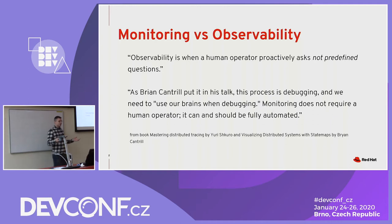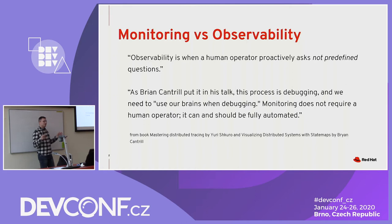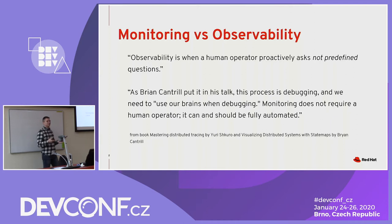Before we start, I would like to talk about the difference between monitoring and observability, because I think these two terms are referred to interchangeably and I don't think they mean the same. Observability is something that requires human interaction — it's when you debug a system using telemetry data, as many conversations on the internet discuss.